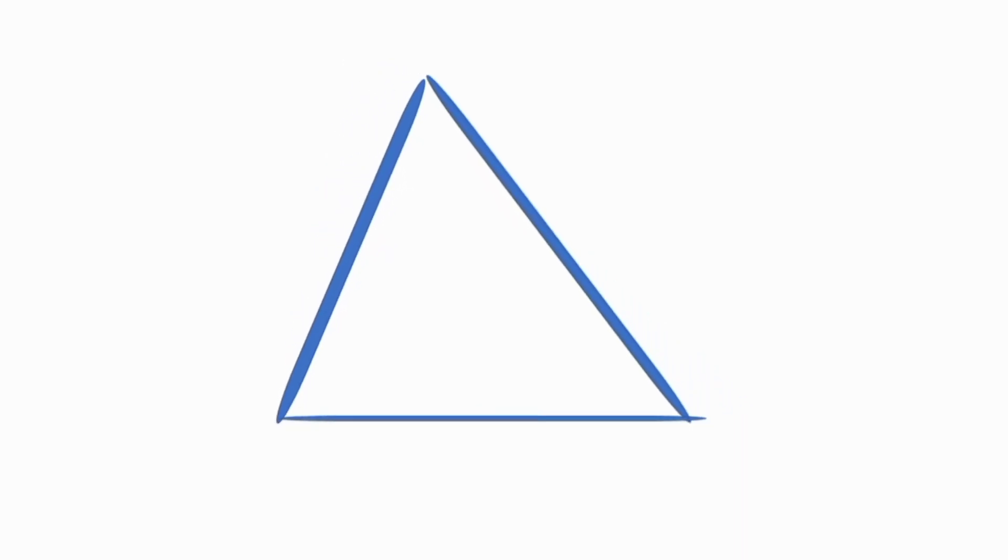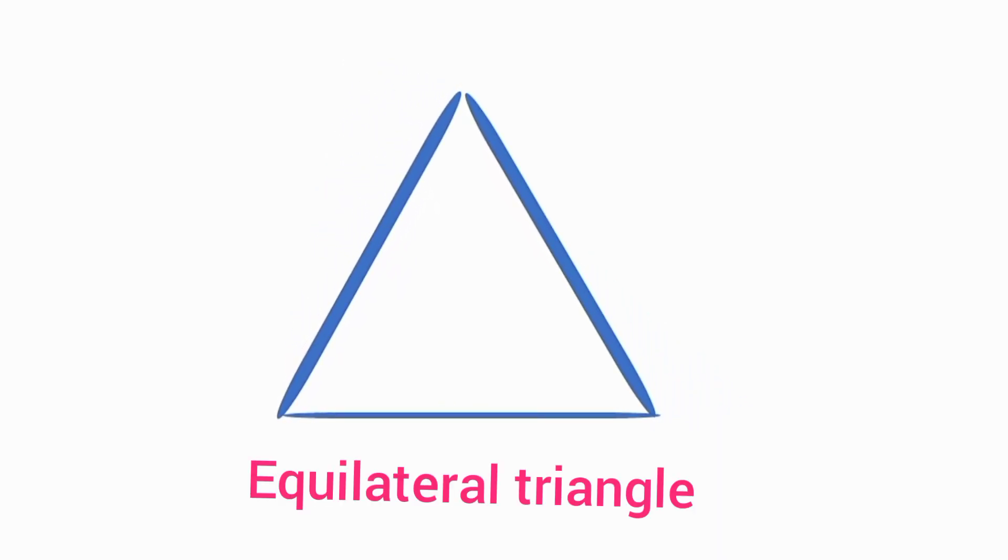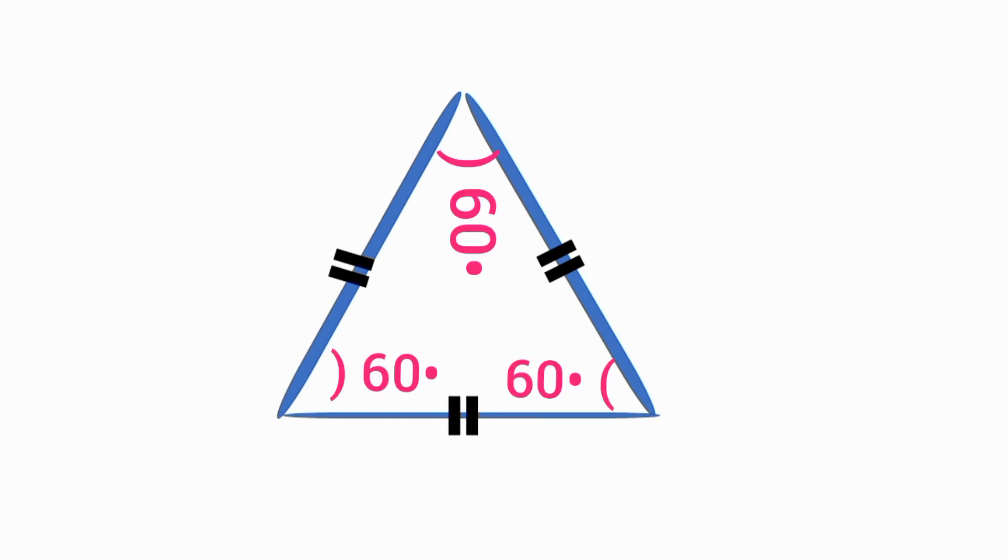Number two, equilateral triangle. An equilateral triangle is a type of triangle in which all three sides are equal in length. It is called an equilateral triangle because it has three congruent sides. An equilateral triangle always has three angles of 60 degrees, and it is the only type of triangle in which all three angles are equal.